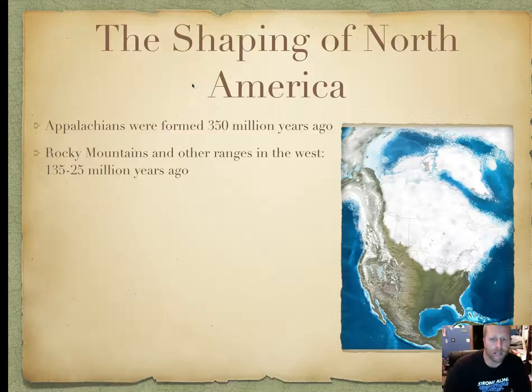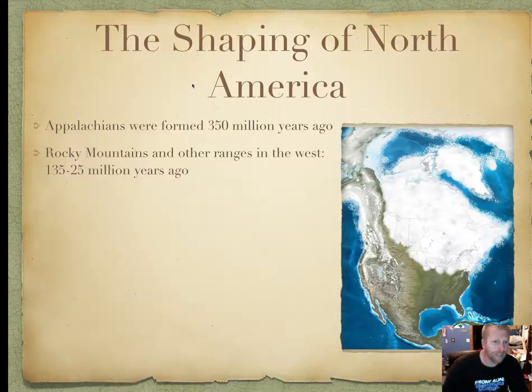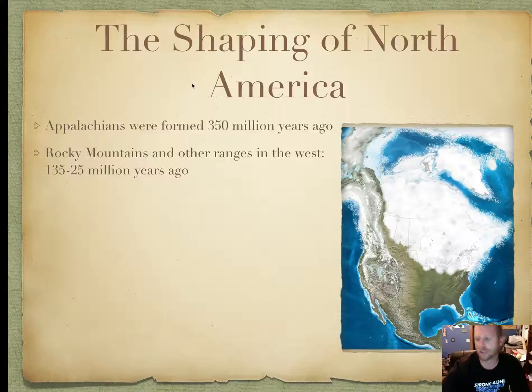The Rocky Mountains and other ranges of the west are relatively new. They were formed 135 to 25 million years ago, so we've got the young mountains.